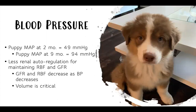A study on healthy puppies showed mean arterial pressure of around 49 mmHg at two months of age, rising to approximately 94 mmHg at nine months. You can tolerate a lower MAP in younger patients, but lower blood pressure reduces renal autoregulation of blood flow and GFR. These patients are very sensitive to hypovolemia and dehydration, so volume management is critical.